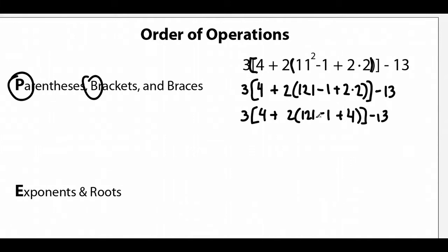Now we're still inside of our parentheses and now we do addition subtraction from left to right. So here we actually have subtraction first. So let's do that before we add. So 121 minus 1 is 120. And we leave that in parentheses and drop it all down.